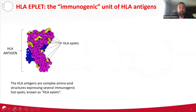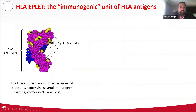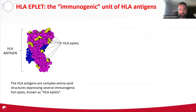As you know, the HLA antigen that you see right here is composed of a very complex amino acid structure, and dispersed within this structure there are these hot spots — colored here in yellow — that are immunogenic, which means we have evidence that the immune system of the patient develops antibodies against these hot spots.